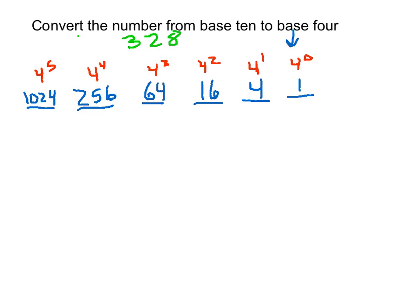You might be saying, how do I know when to stop? How do I know not to continue to the next power of 4 — say, 4,096? What you want to do is continue doing powers of whatever base you're converting to, until you get to the first number where that place value is larger than the number you're given. We're given 328, so we continue until we get a number larger than 328, then we stop.